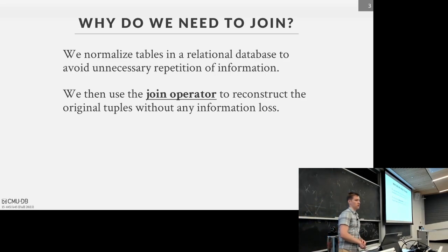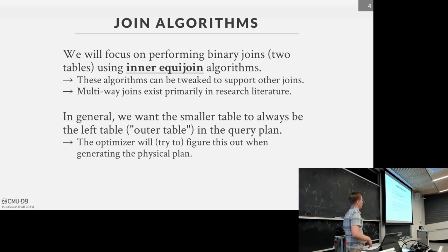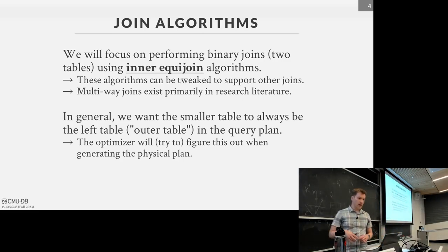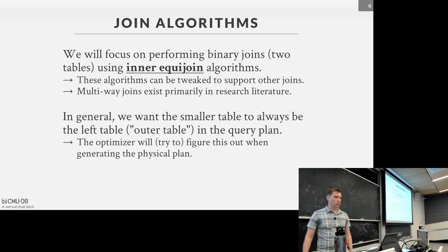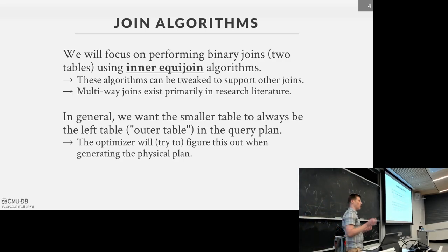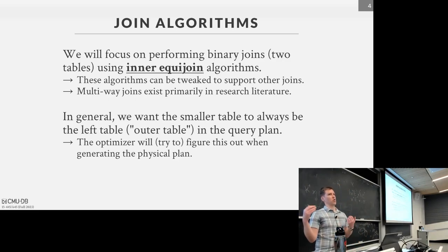In today's lecture we're going to focus on a class of joins called binary inner equi-joins. Binary means we're joining two relations. Inner equi-join means we compare an attribute from each relation, and if there's equality we emit a concatenated tuple satisfying that predicate. These algorithms can be modified to support other sorts of joins depending on the predicate — range scans, anti-joins. The textbook generally refers to these as theta joins, where you're not necessarily using an equality operator.